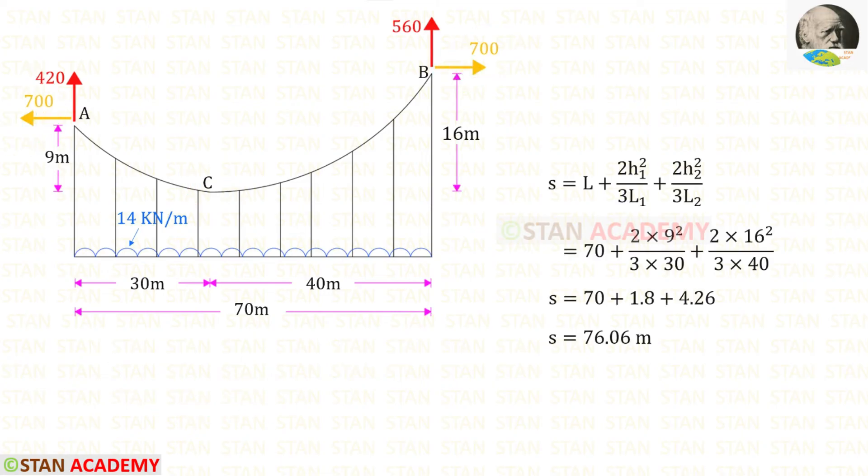Now let us find the length of the cable S. We can use this formula and find the length of the cable. L is 70, H1 is 9, L1 is 30, H2 is 16 and L2 is 40. Finally for the length we will get 76.06 meter.